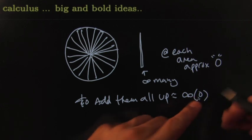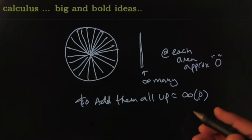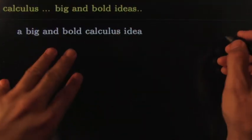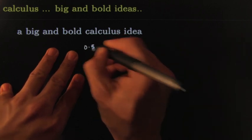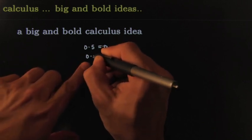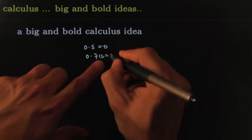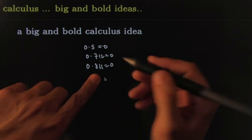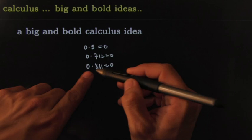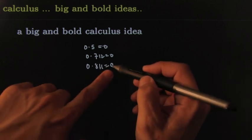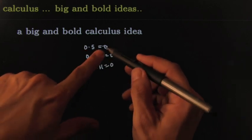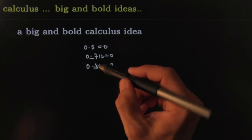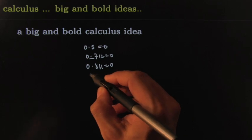So if you wanted to add them all up, you'd be doing something like infinitely many of these guys that each have area roughly equal to zero. You get crazy things like: what is zero times infinity? It's not that clear. If I take zero times five, it kills the five and gives you zero. Zero times 712 would give you zero. Zero times 811 gives you zero — it's as if zero is like a vampire: whenever it bites you, you turn into it.